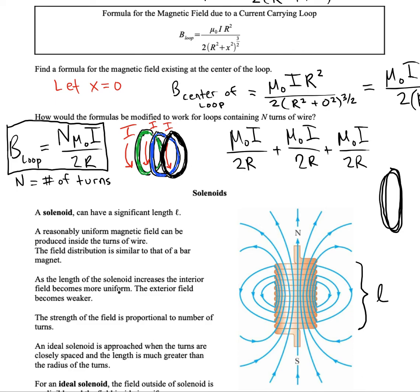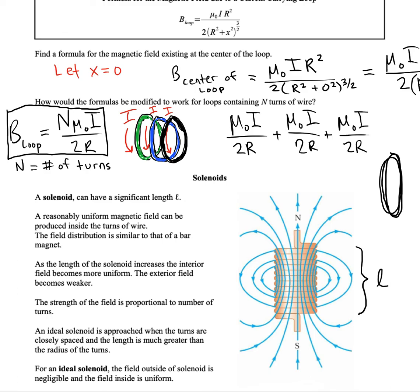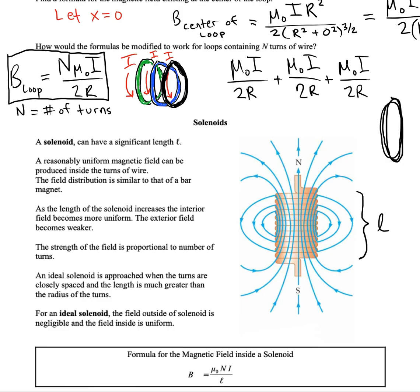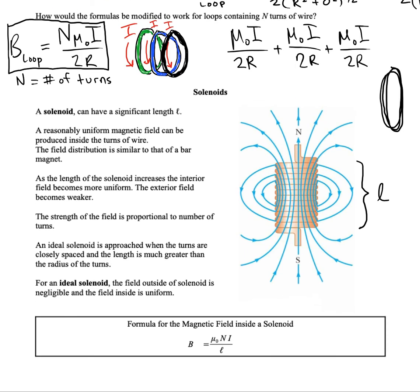So that's an interesting property that solenoids have, and it just demonstrates that close connection between electricity and magnetism. As the length of the solenoid increases, we find that the interior field becomes more and more uniform. Not only that, but the exterior magnetic field also becomes weaker. Of course, the field's strength inside will be proportional to the number of turns in the solenoid, so the more turns you have, the stronger the magnetic field you can create. An ideal solenoid is approached when the turns are closely spaced, and the length is much greater than the radius of the turns. For an ideal solenoid, we'll treat the exterior field as if it were negligible, almost zero, and we'll treat the interior field as if it's uniform.